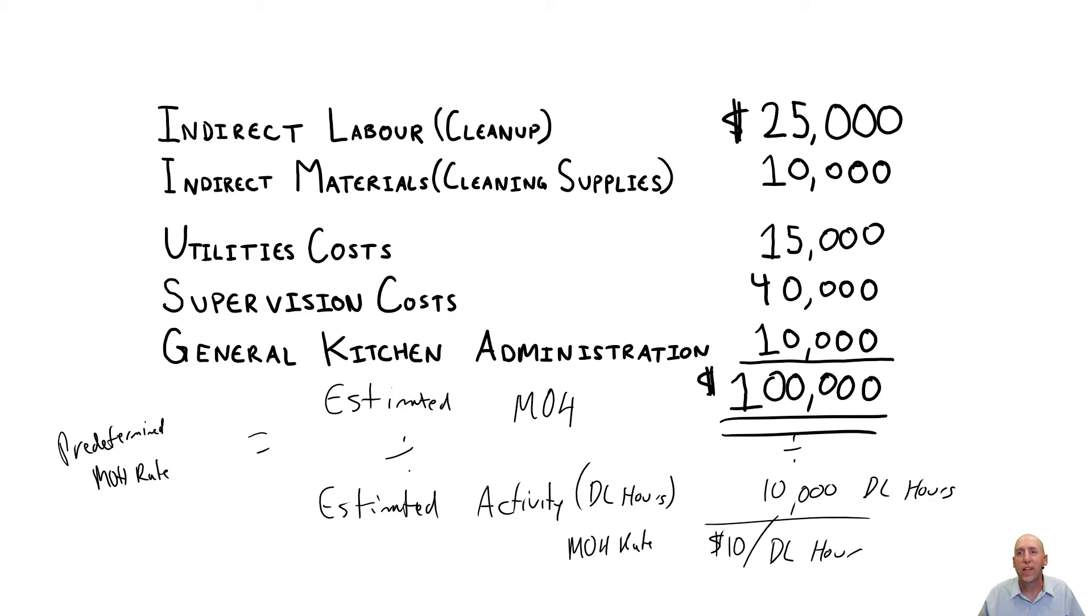Some companies, though, find that it's not accurate enough for them. They have way over-applied, way under-applied overhead. They have some weird things going on in their costing system. Maybe they're selling more products, but making less money, and they're going, something's off about my cost. Something smells funny here.